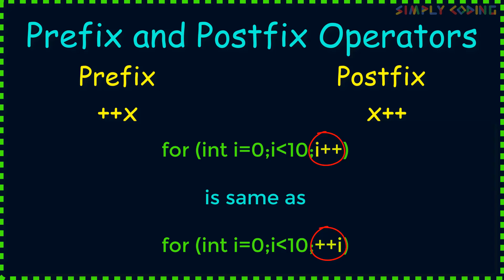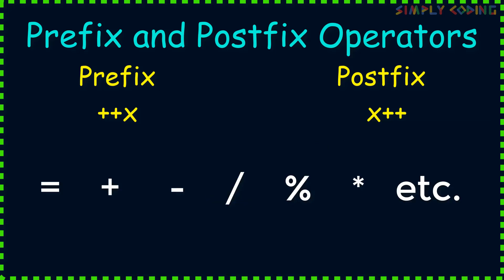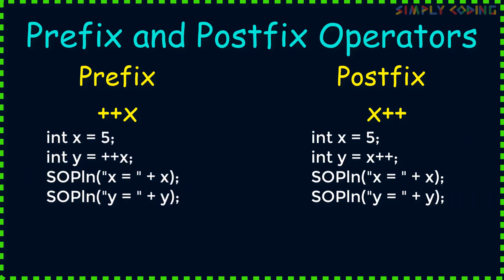You will notice its prefix and postfix behavior when other operators such as equal to sign comes into picture. So if we have two programs and in one we have y = ++x and in the second we have y = x++, and you run it, you will see x is anyway incremented in both whether it is prefix or postfix. So its value is 6.